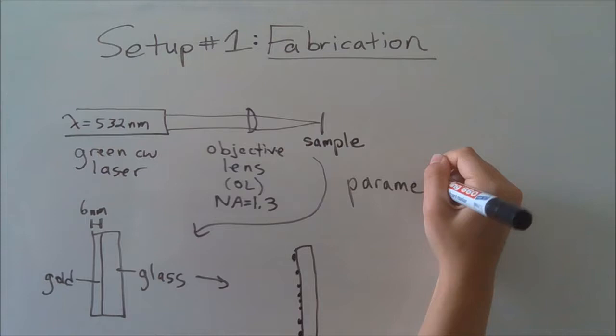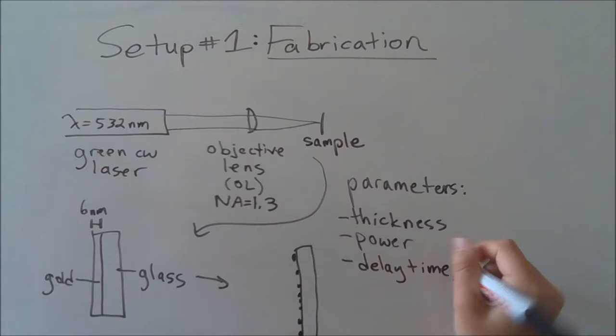Various parameters can be altered to change the size and shape of the gold structure and consequently alter its optical properties, including the thickness of the gold layer, the delay time of the laser at each point, the laser's output power,